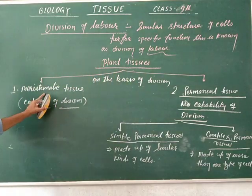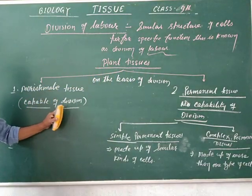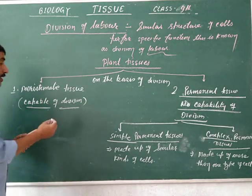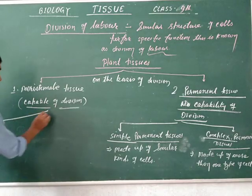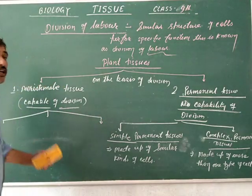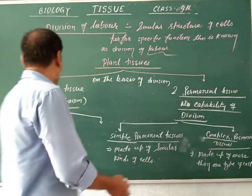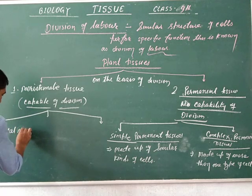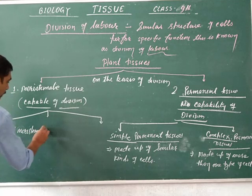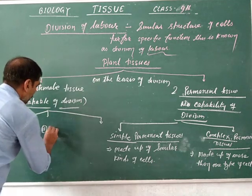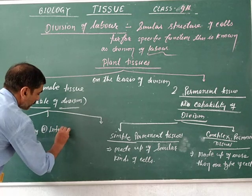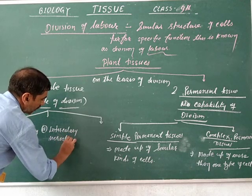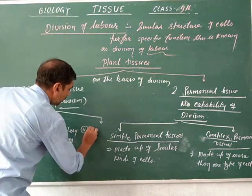Similar to meristematic tissue, it can be divided into other cells. On the basis of position, meristematic tissue can be classified into three groups: first, apical meristem; second, intercalary meristem; and third, lateral meristem.